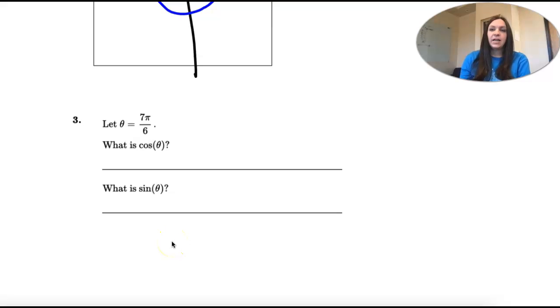Okay, number three. We're looking at an angle theta of 7 pi over 6, and it's asking for sine and cosine.